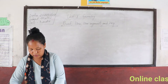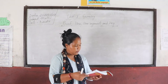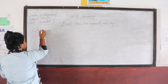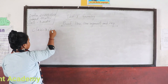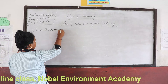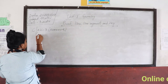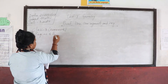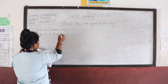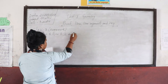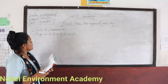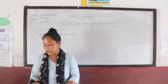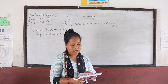Your homework for class 3 is page number 8, question number 1, 2, and 3. Do those as homework. Now let's discuss the class assignment of class 4. I think the students of class 4 are ready with your book, pencil, pen, and eraser.